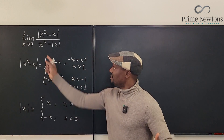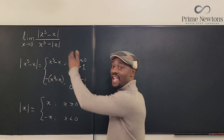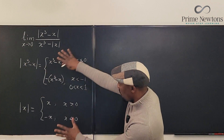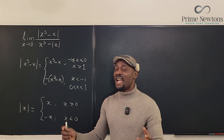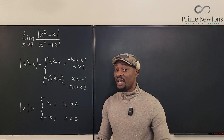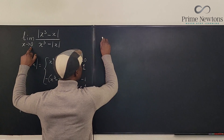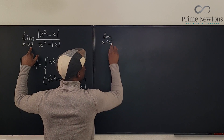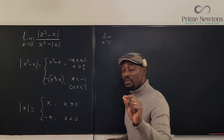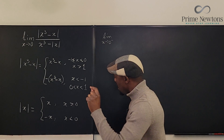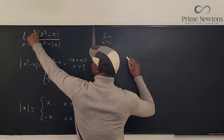Because this is a piecewise function, you can't just plug it in — you have to choose the piece relevant to 0. Since it's piecewise, we take the limit from the left and the limit from the right and compare them. If they are the same, we have a limit; if not, the limit does not exist. For the limit as x approaches 0 from the left, we're looking for values just less than 0, so we pick the piece valid on (-1, 0).